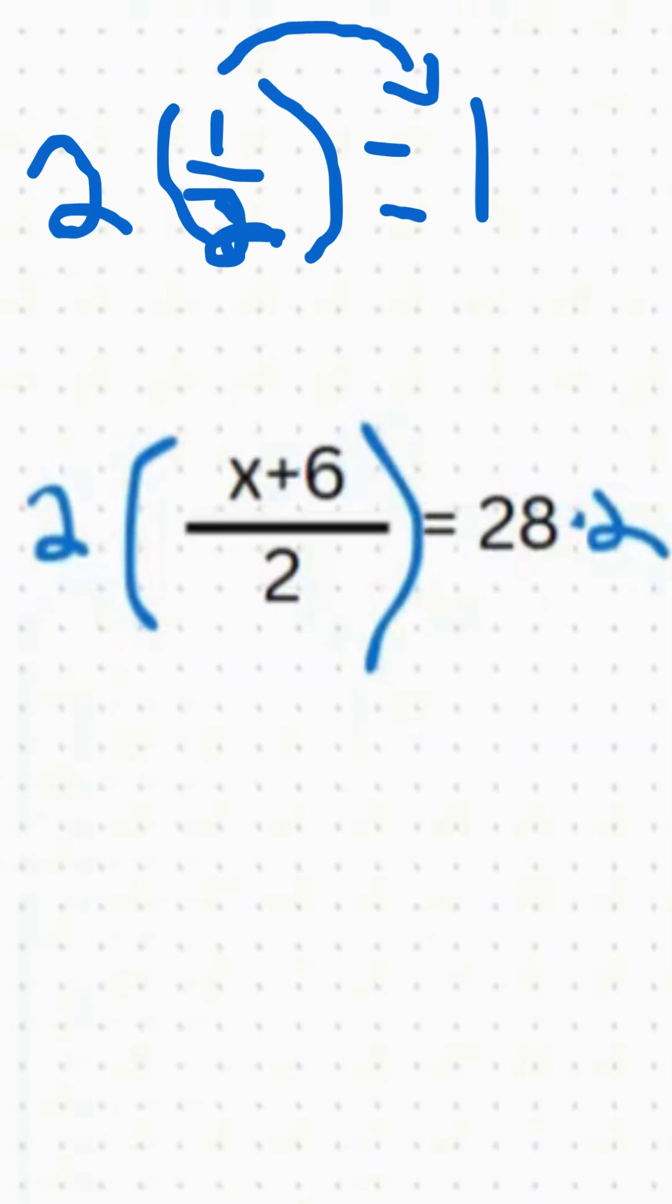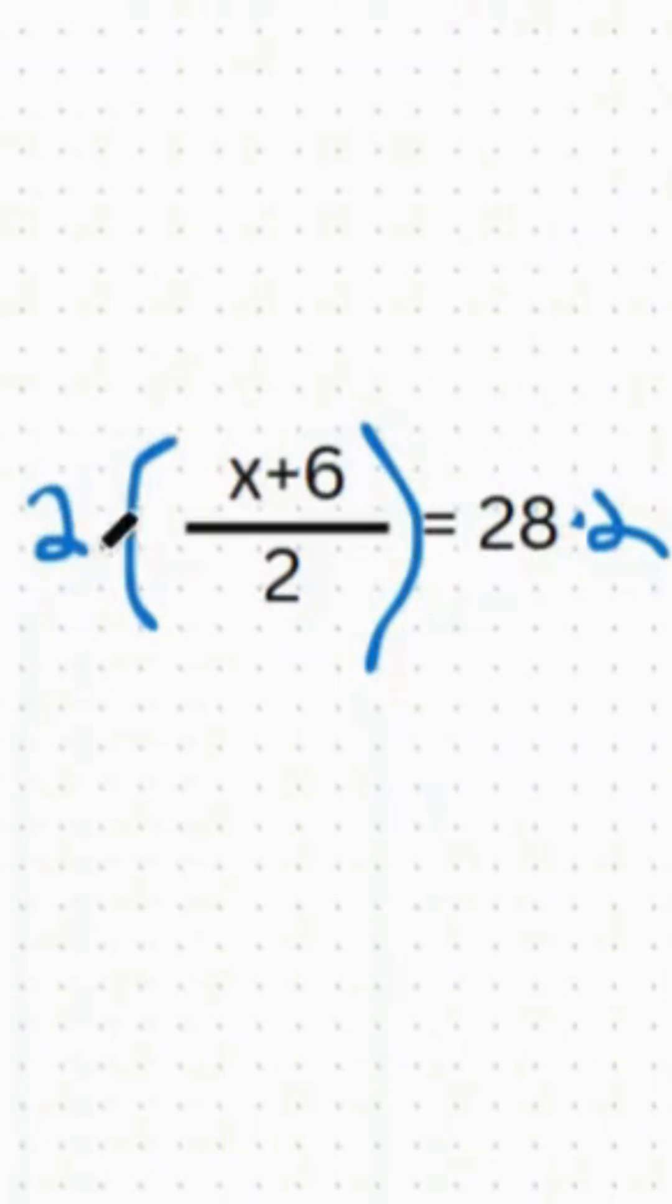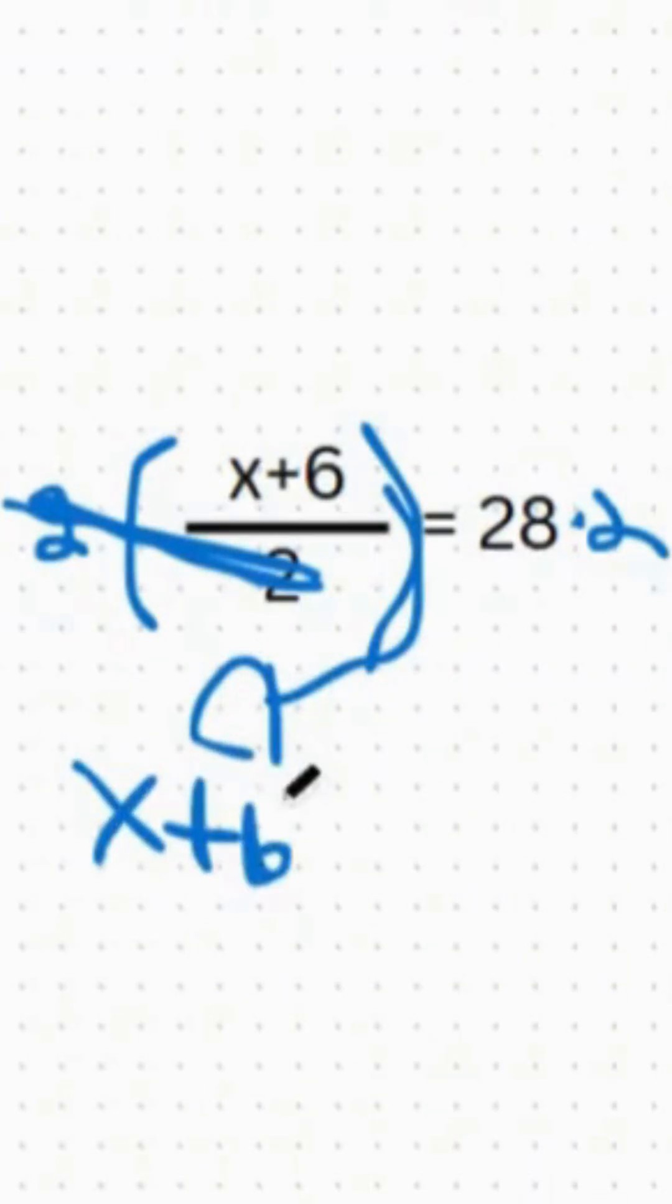That's exactly what would happen because these two would cancel out and as a result you're left with x plus 6 which is the numerator.